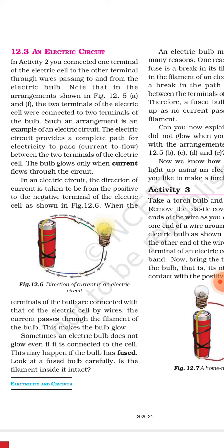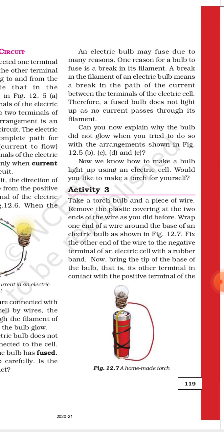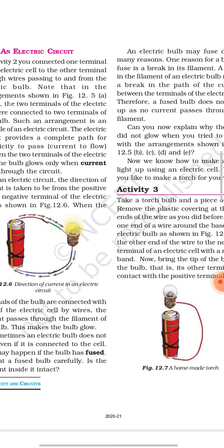What is a fused bulb? A fused bulb means if there is a loose connection in the filament or some other problem in the bulb, then we call it a fused bulb. In electric circuits the bulb will glow in all conditions, except when the bulb is fused. In Activity 3, we do not connect one terminal of the cell to the wire — we directly put it on one terminal of the cell, and the other terminal is connected to the negative terminal. With the help of this, we can make a homemade torch.